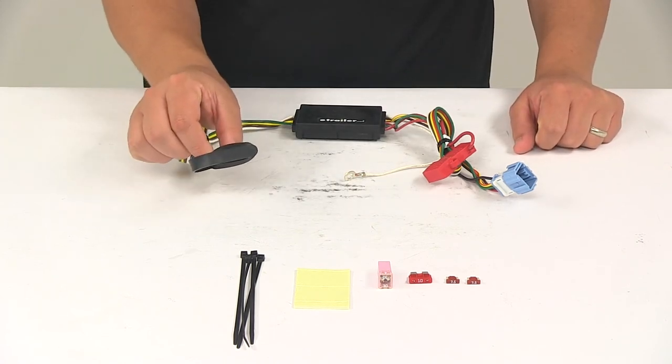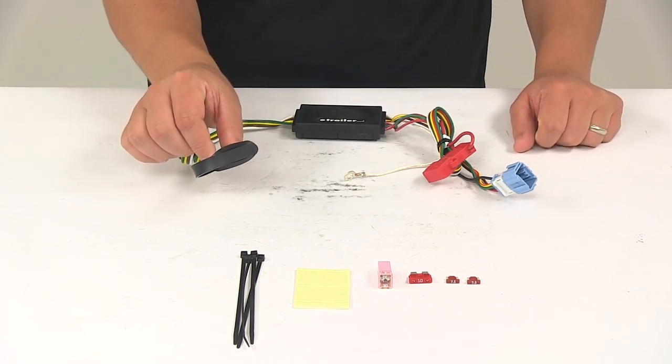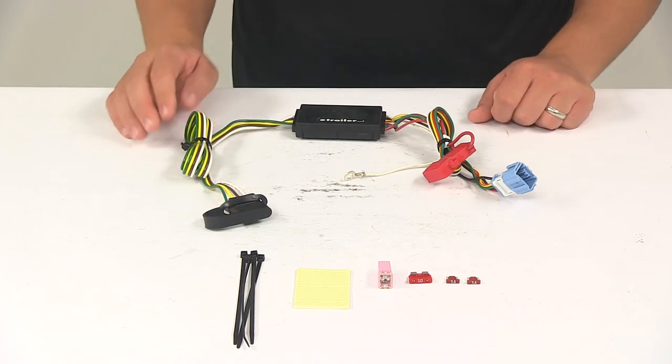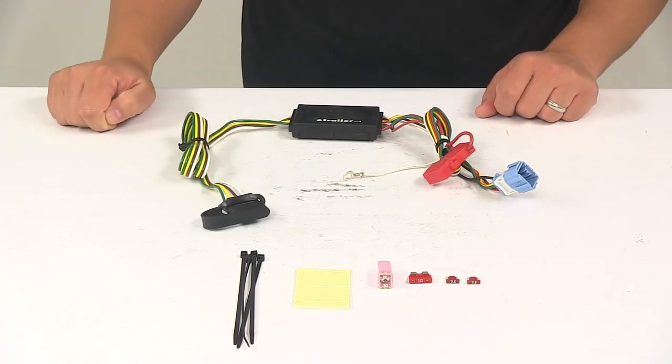Once your install is complete, the four-way connector is going to be stowed in an out-of-the-way location within your rear cargo area. Plenty of wiring here, that way you can extend it out the rear hatch when you need to use it, roll it up and tuck it away when you don't.